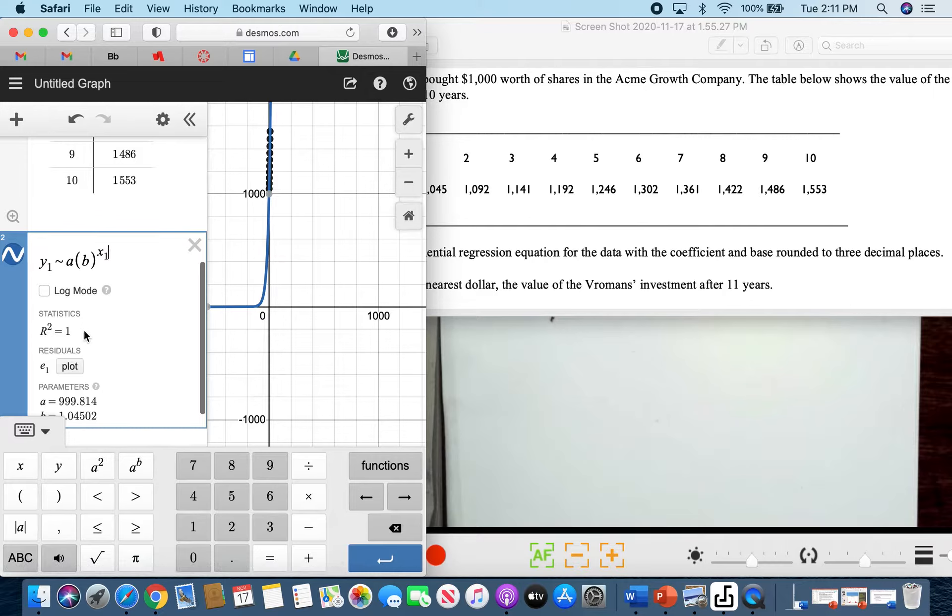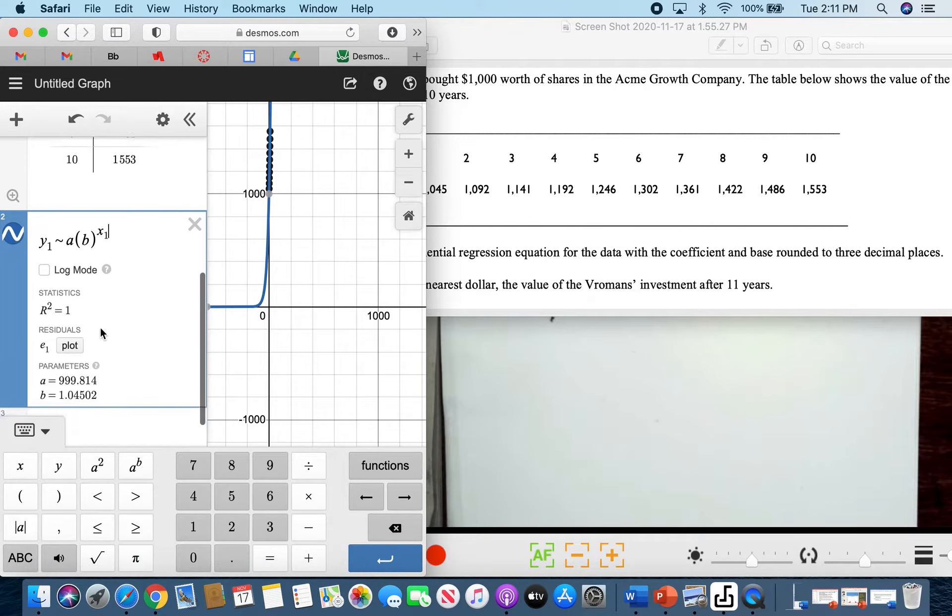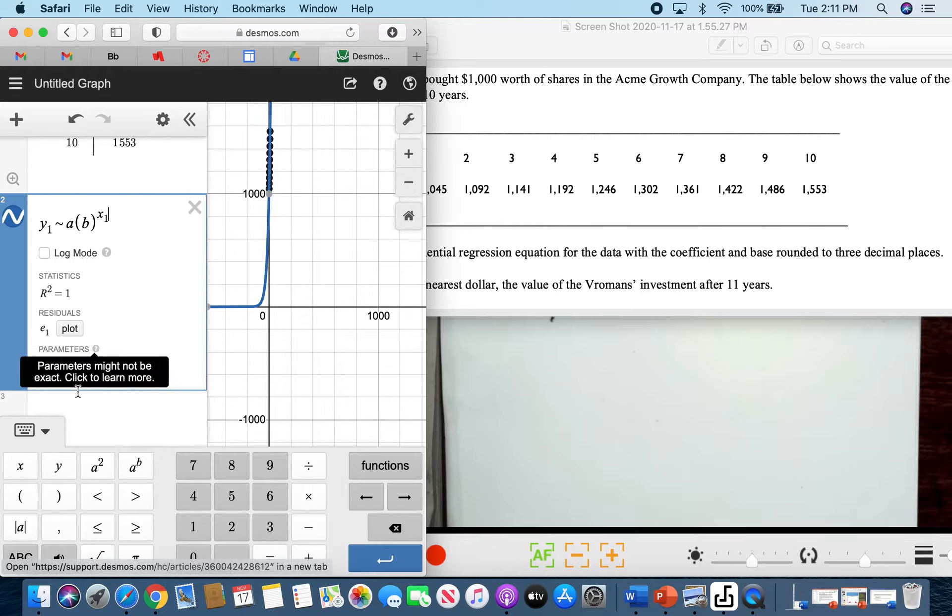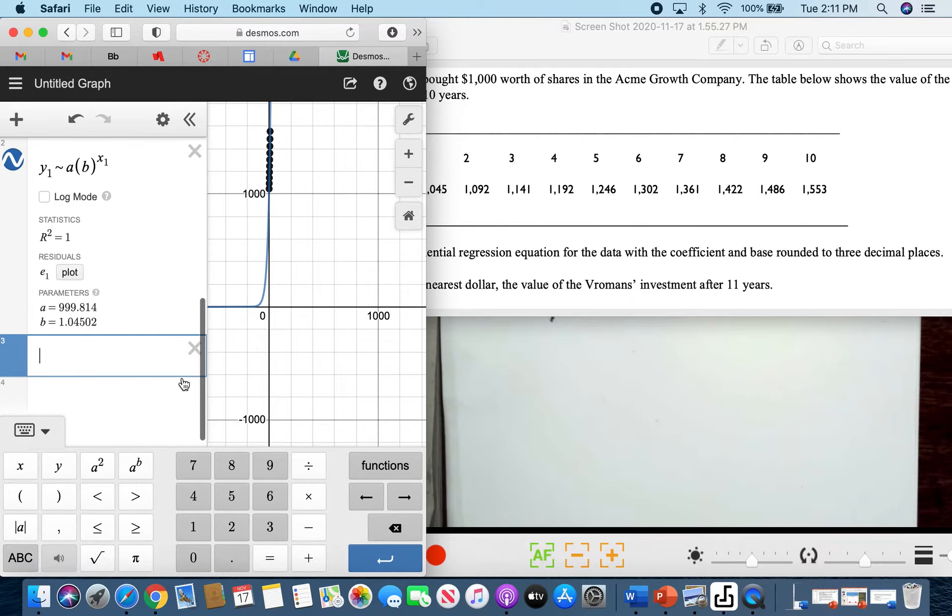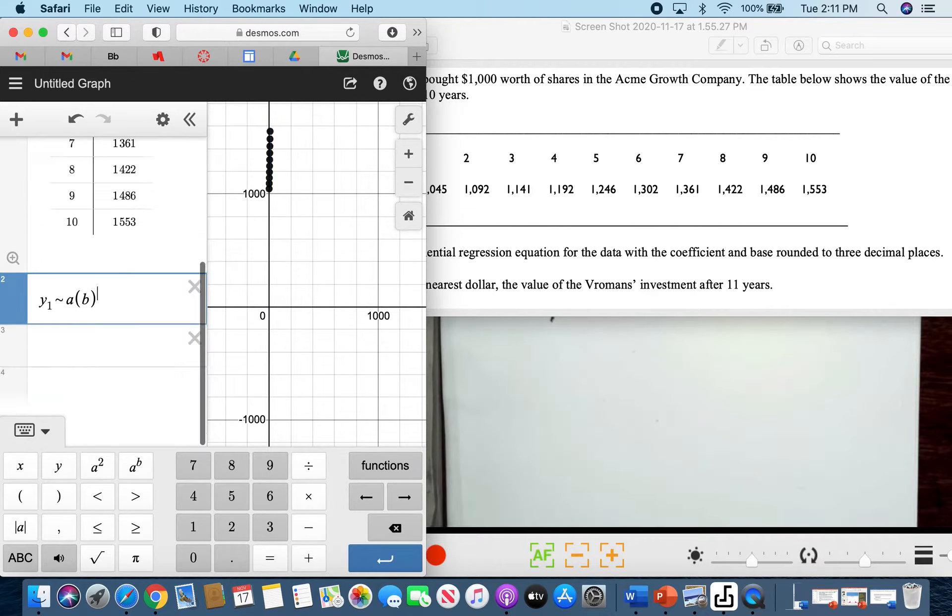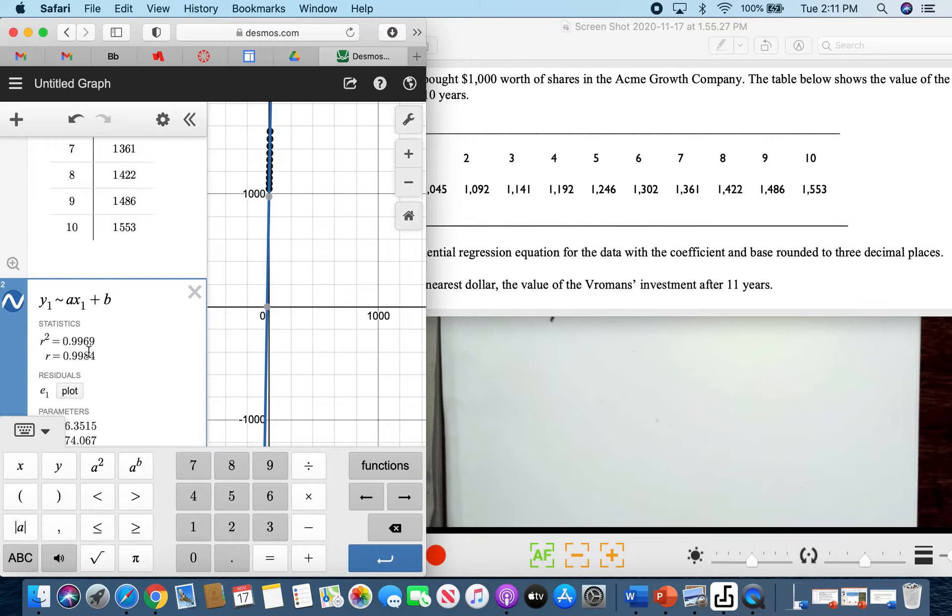it's a perfect exponential regression. We don't really need to use linear, but for the purpose of comparison, we can also make use of linear. So if it's linear, I'm going to use AX₁ plus B. It's also a good fit for an equation, but as from the previous, we have found out that